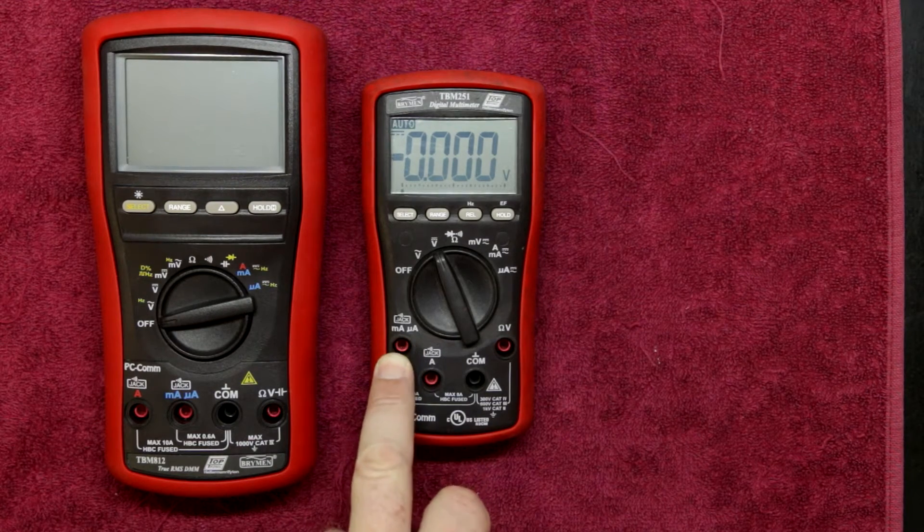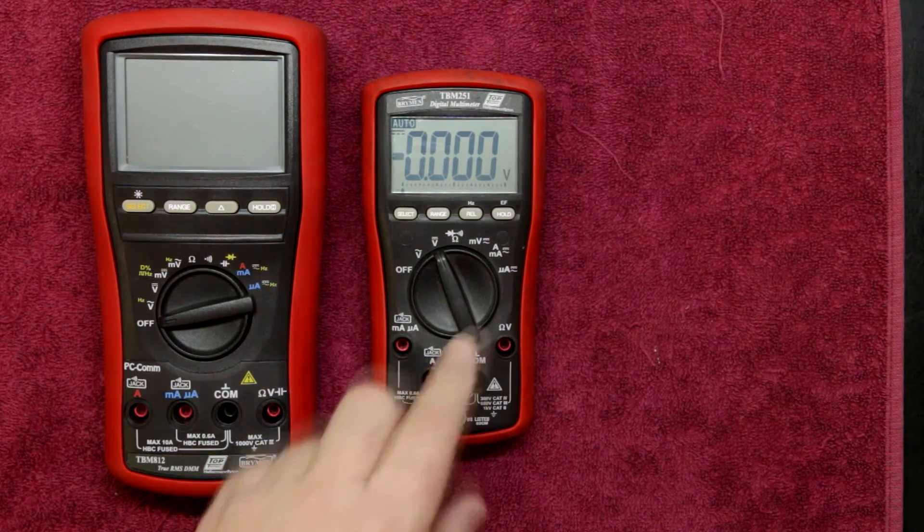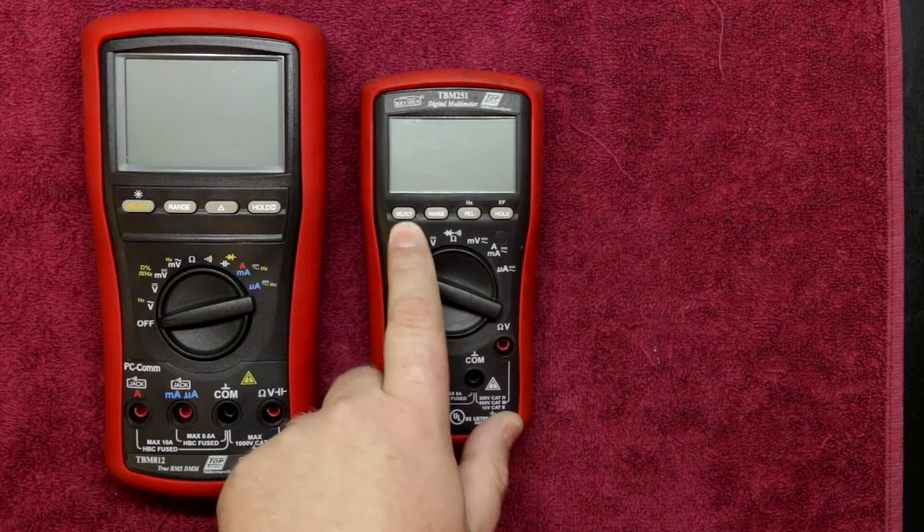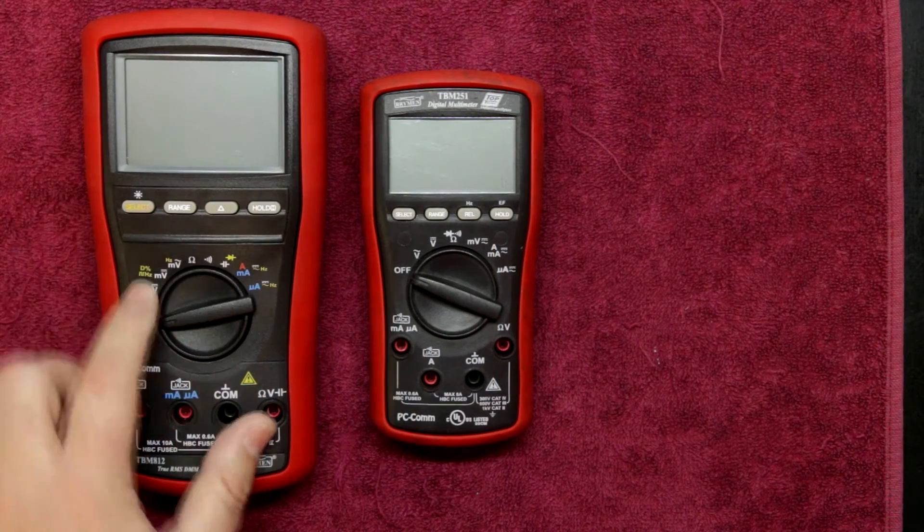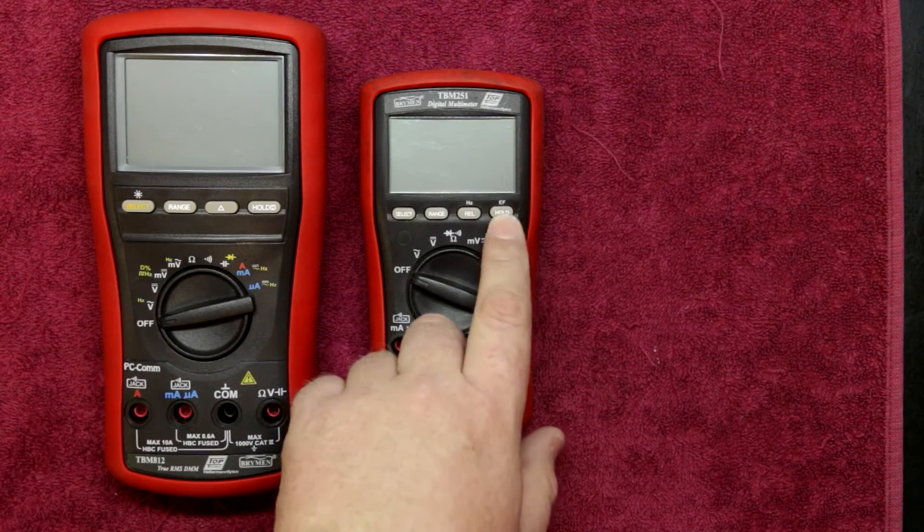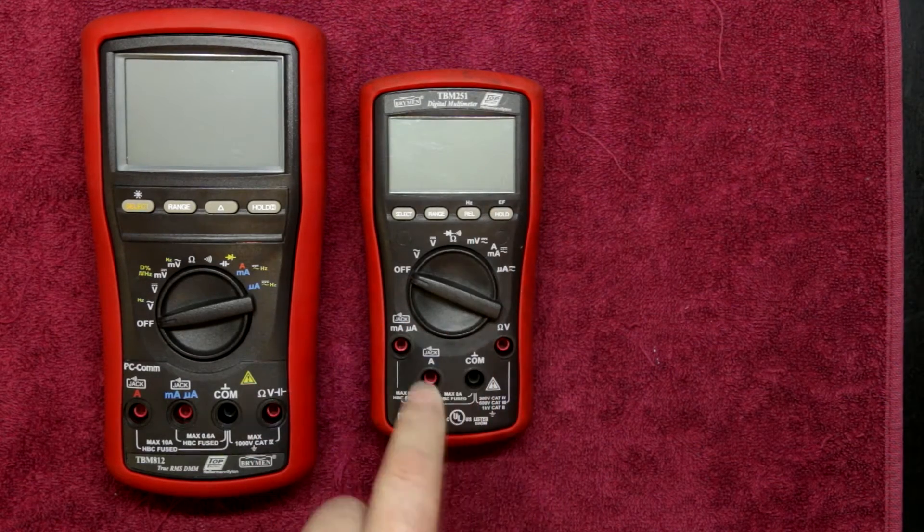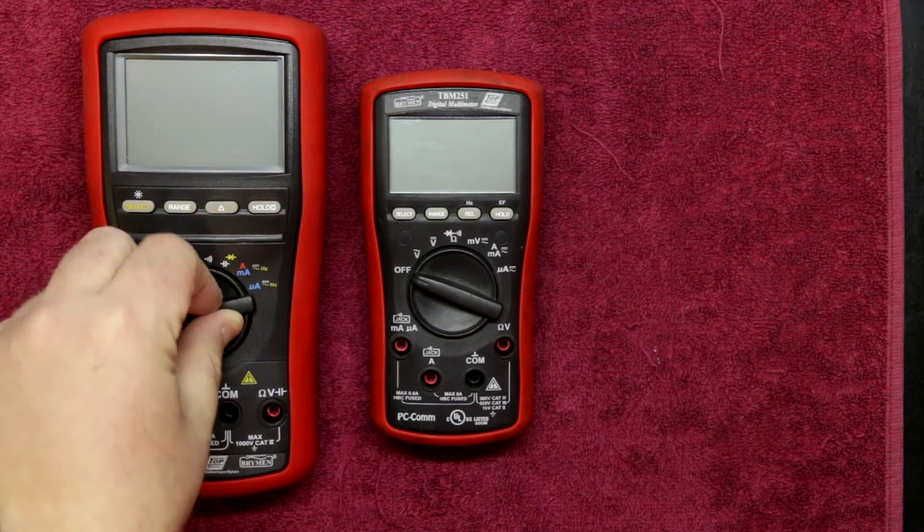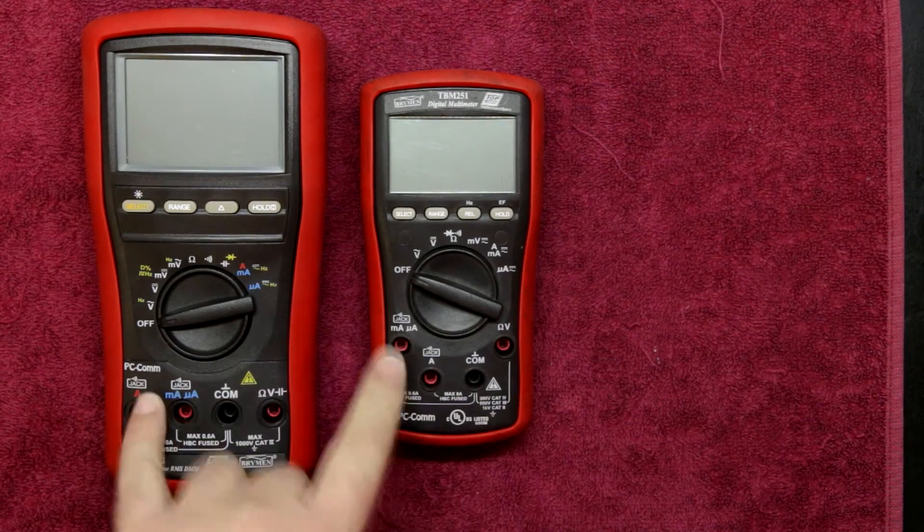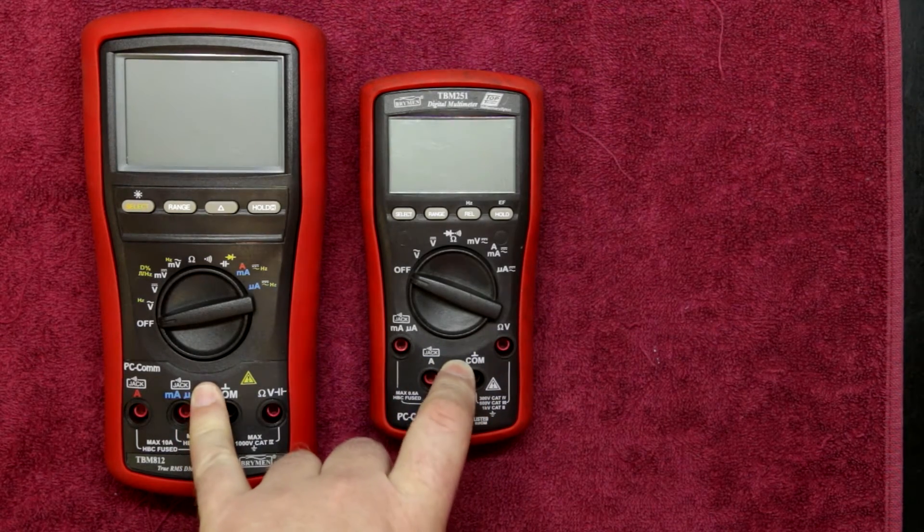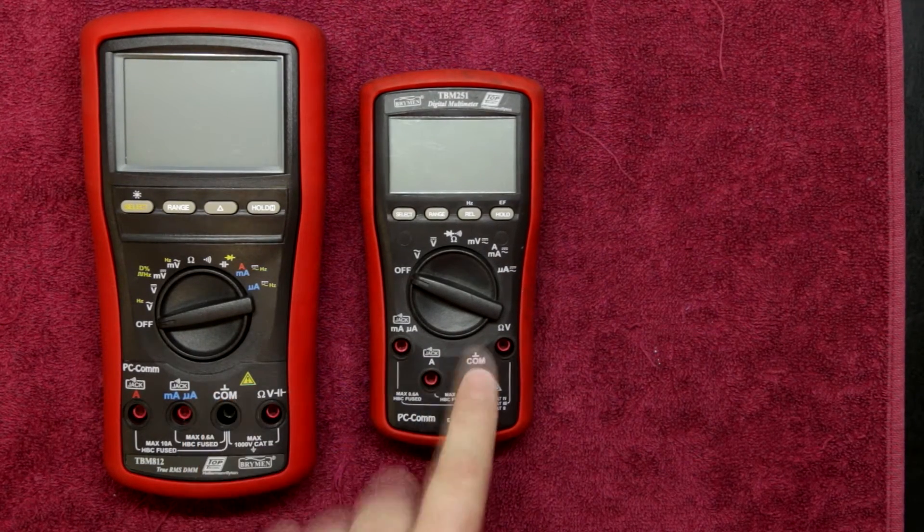Of course you'll have your milliamps jack. Now they have swapped these amps and the milliamps jacks around on this meter. I'm not sure why they've done that. But for all intents and purposes, functionality wise you'll notice you've got your select button, you've got your range button, you've got your hertz release button over here. This one doesn't do that function. Well it does but it's a second function using the select button and then you've got your hold function but you also have your electromotive force field electrical field testing which is the same as the TBM 829 series meters.